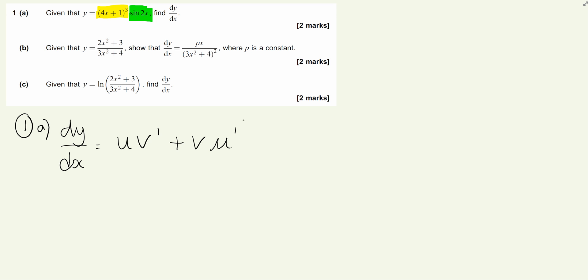It doesn't matter which order we identify our u and v functions, so we'll call the first one u, (4x + 1)³, and our second one we'll call v, sin(2x).